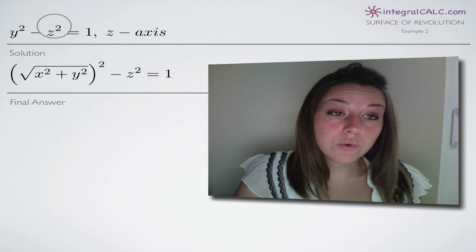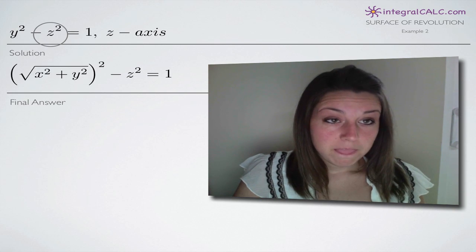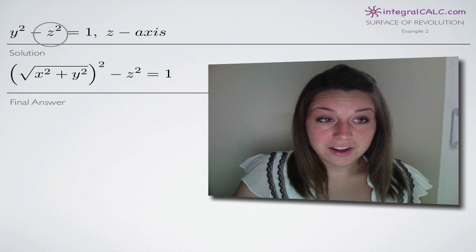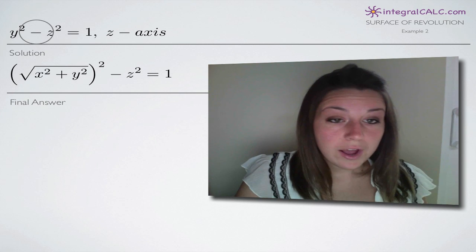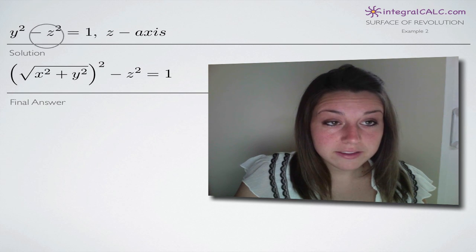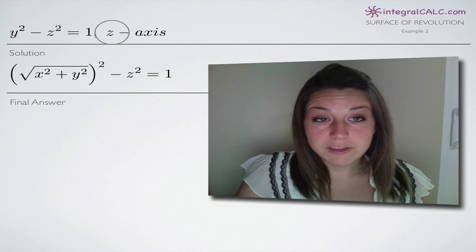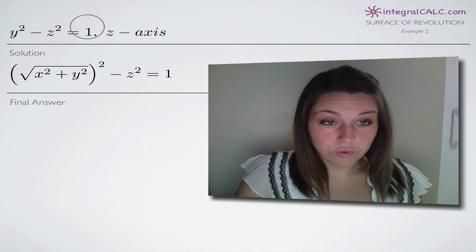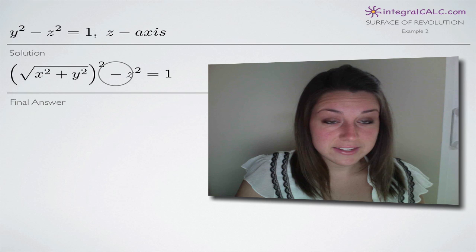We're going to completely ignore the variable z and anything else in the problem that's not a variable. So you can see down here in our solution, we've ignored this minus z squared because we're rotating around the z-axis, and we've ignored the one. So all of this part here is going to stay.